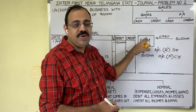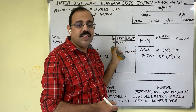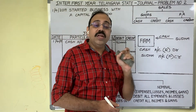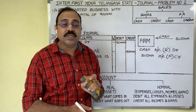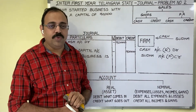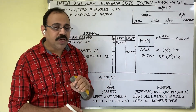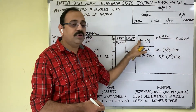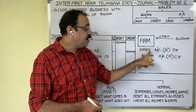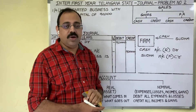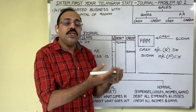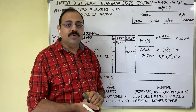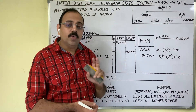First step: identify the minimum two accounts. Cash is coming into the firm. While writing journal entries, always we should analyze each and every transaction from the firm's point of view — your assumption is you are an accountant of this firm. Cash is coming into the firm, therefore cash account is one account. This cash is brought by the owner, so capital account is another account.